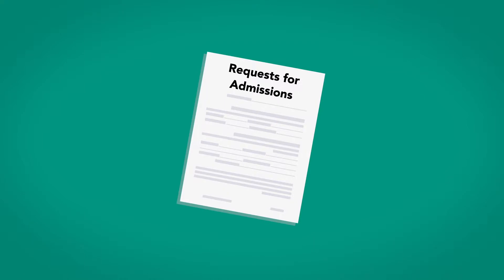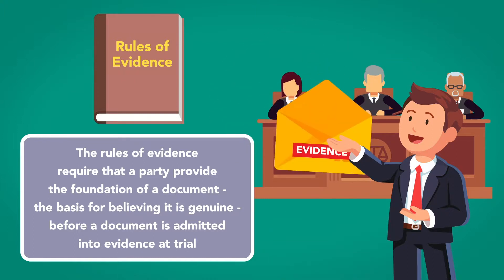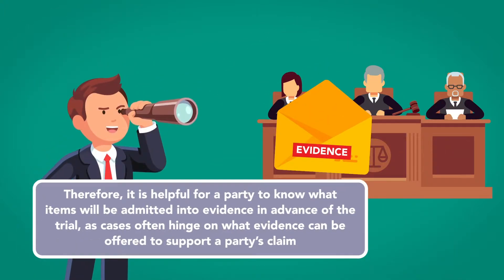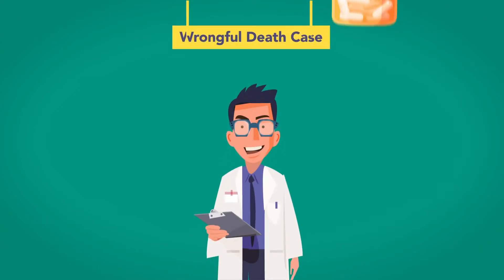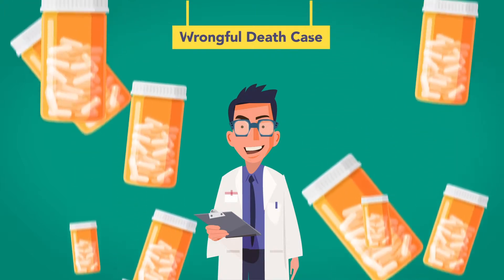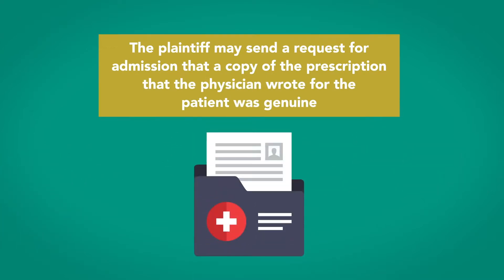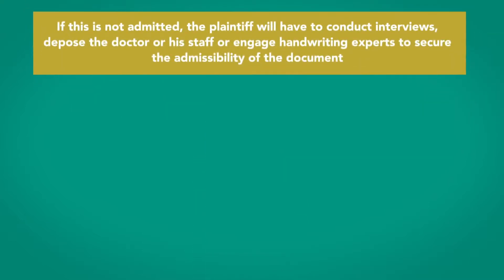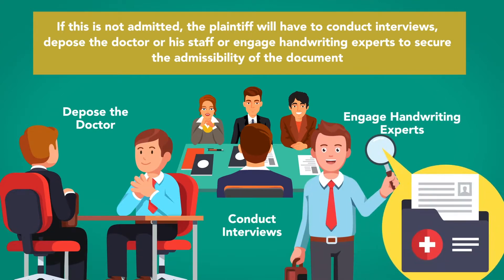Requests for admission are uniquely helpful in establishing the genuineness of documents. The rules of evidence require that a party provide the foundation of a document — the basis for believing it is genuine — before a document is admitted into evidence at trial. Therefore, it's helpful for a party to know what items will be admitted into evidence in advance of trial, as cases often hinge on what evidence can be offered. For example, imagine a wrongful death case against a physician alleging that the physician prescribed an unusual and dangerous drug in dangerously high doses. The plaintiff may send a request for admission that the copy of the prescription the physician wrote was genuine. If this is not admitted, the plaintiff will have to conduct interviews, depose the doctor and his staff, or engage handwriting experts to secure the admissibility of the document.